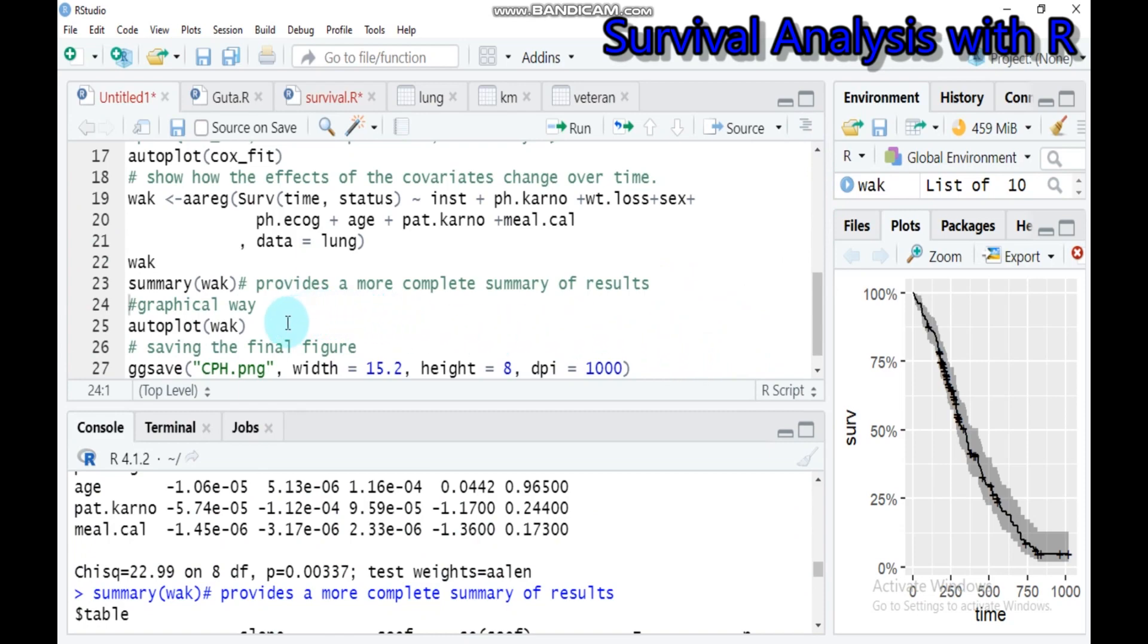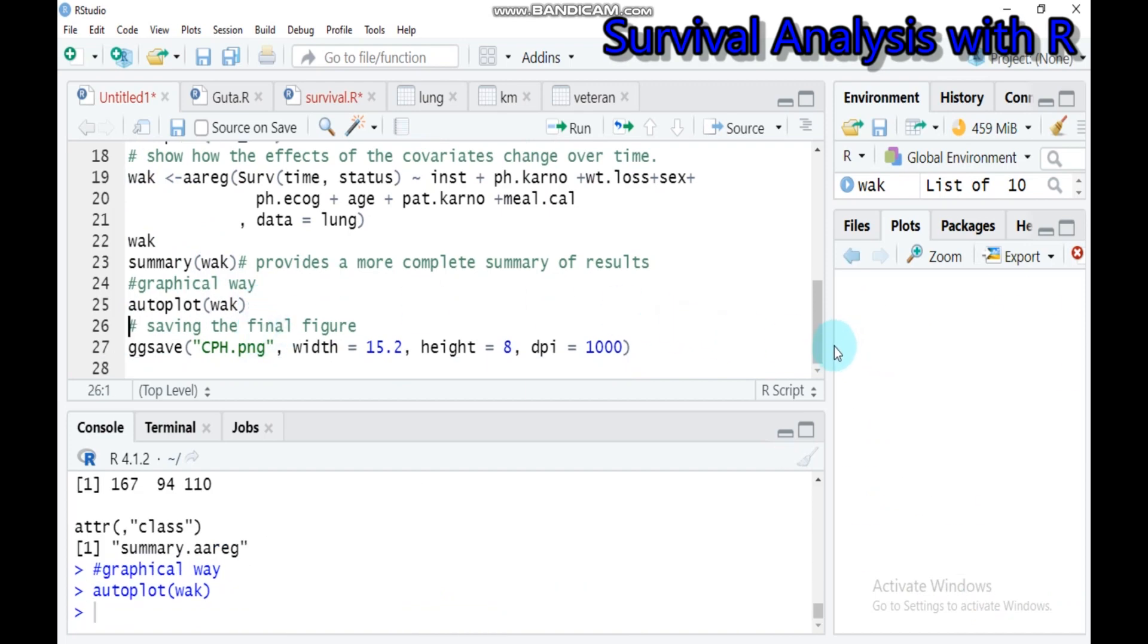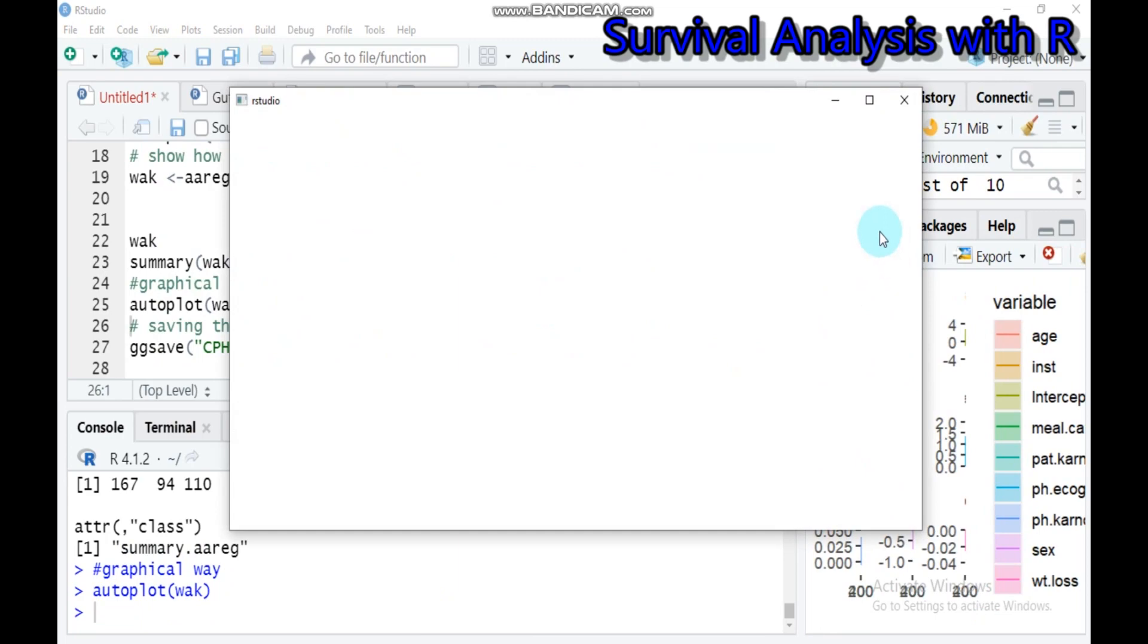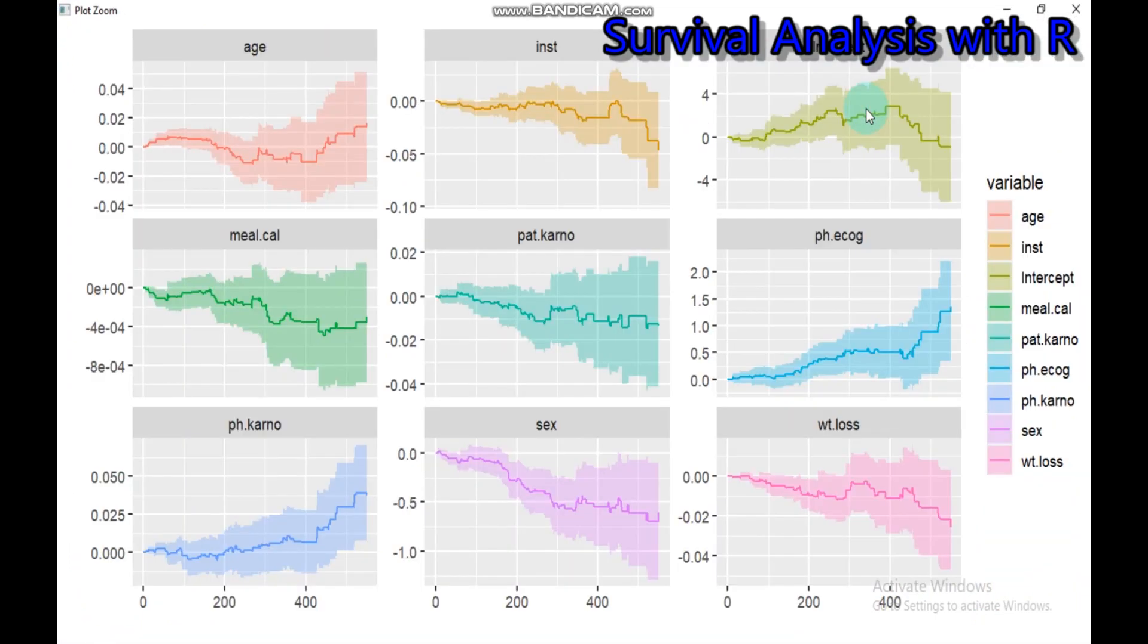Furthermore, if you want to see the effect of all covariates on time, the effect of covariates that change over time, if you want to display on graph, you have to use the autoplot function and write what's created here. Type this and submit to RStudio. By this way you can check the variables and here is the time. You will get a graphical explanation for the survival analysis.